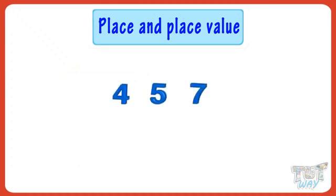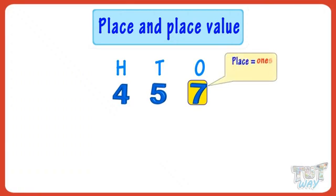We have a number, 457. Let's start with 7. Its place is 1's place. And place value is 7 ones, that is 7.